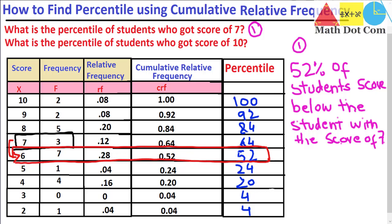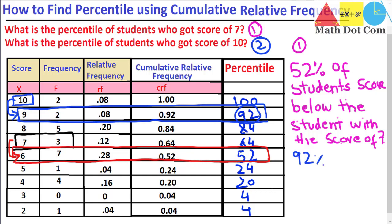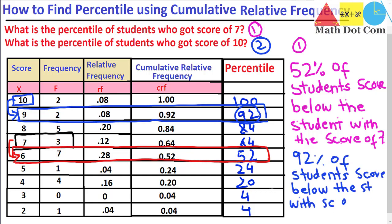Now the second question: what is the percentile of the students who got a score of 10? There are 2 students who got the score of 10. We have to move to the row below that and check the percentile value, which is 92. So we can say that 92 percent of students scored below the students with a score of 10.